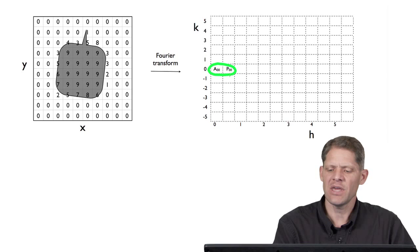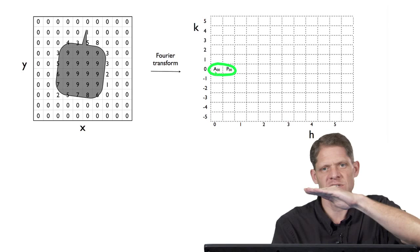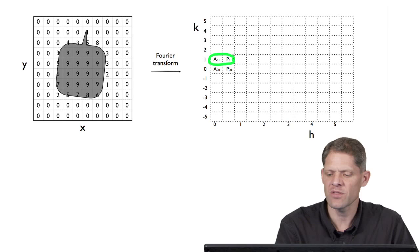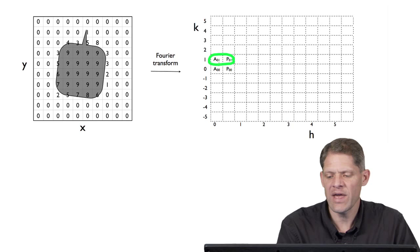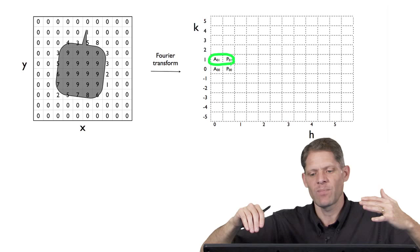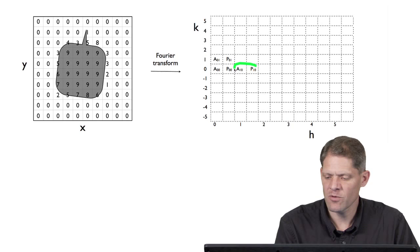It just represents a constant number across that image. The next position — these two values that the computer would respond with are the amplitude of the H equals 0, K equals 1 wave, and the phase of that same 0, 1 wave. This is the wave that has one oscillation across the box in X and none in Y. And here is the amplitude and phase of the 1, 0 wave. So you see these indices of the H and K values of the waves.